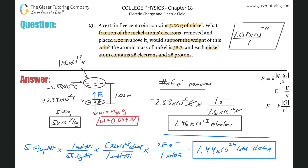You might wonder: since electrons have mass, doesn't removing them reduce the coin's weight? Technically yes, but try calculating how much the weight actually changes — it's so negligible that it doesn't matter.